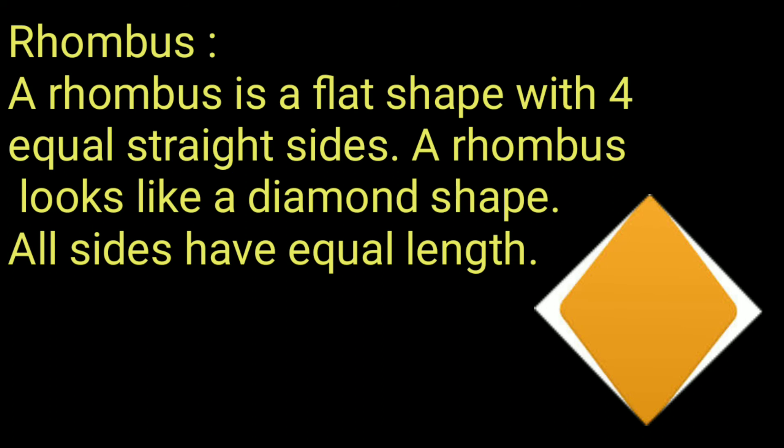Rhombus: A rhombus is a flat shape with four equal straight sides. A rhombus looks like a diamond shape. All sides have equal length.